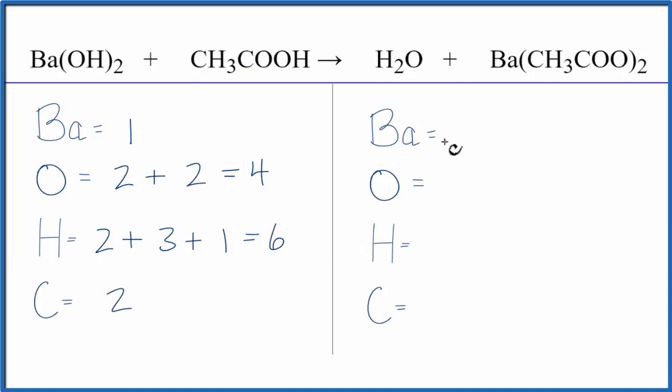On the product side, barium, we have one. Oxygen, one here plus two times two, so that's four, giving us five oxygen atoms.